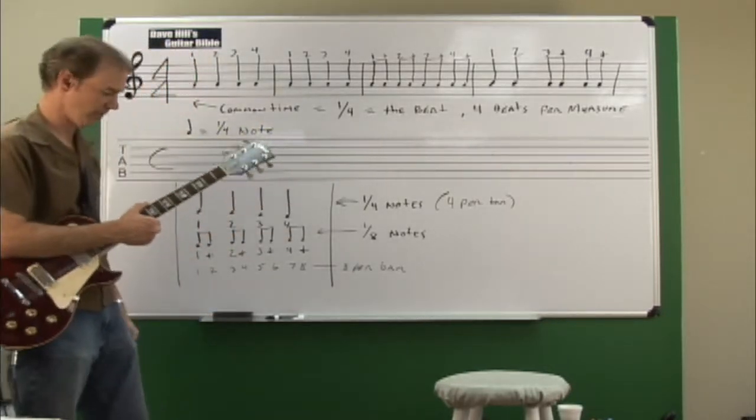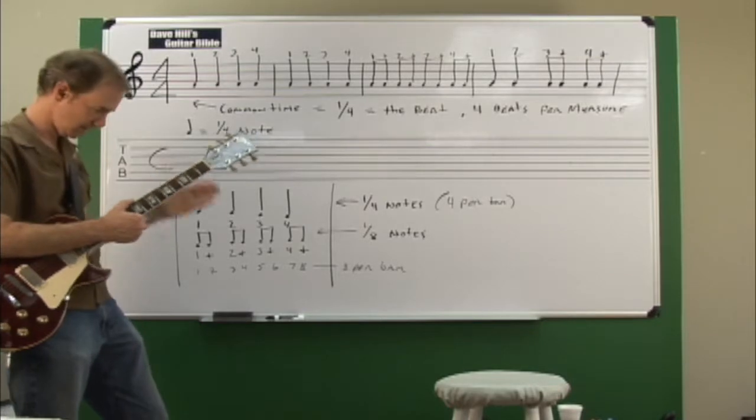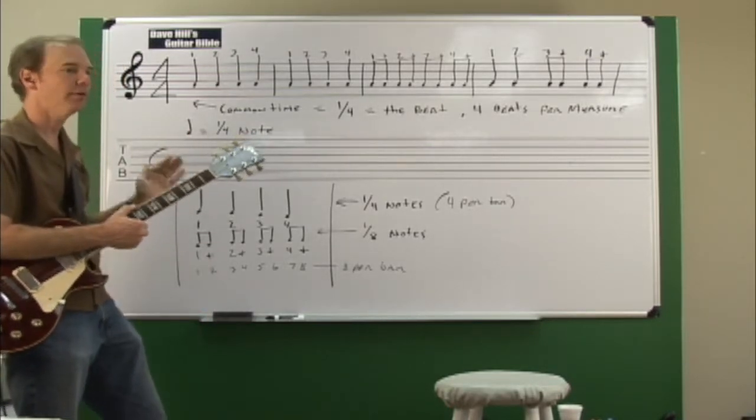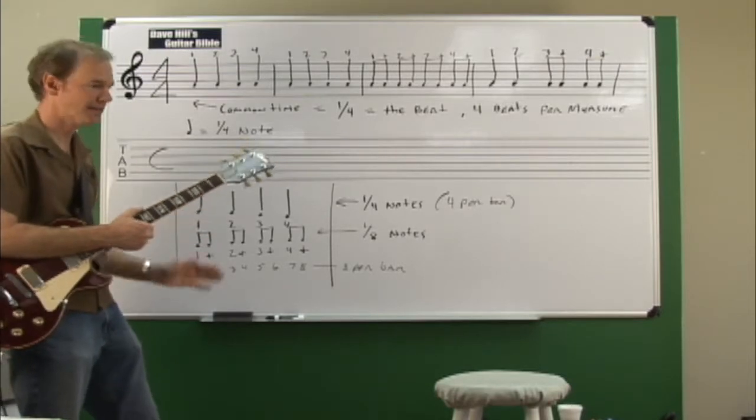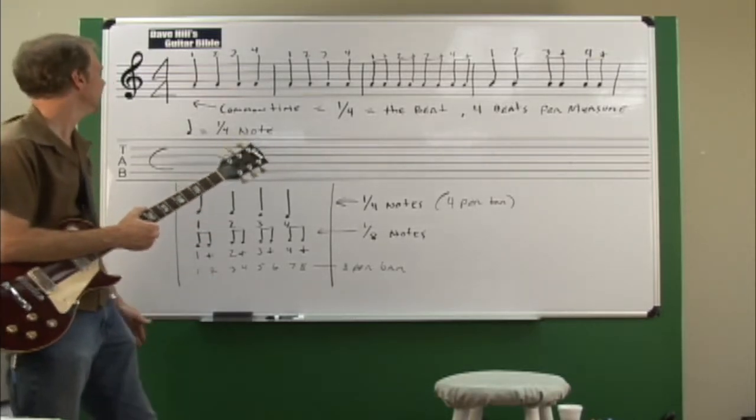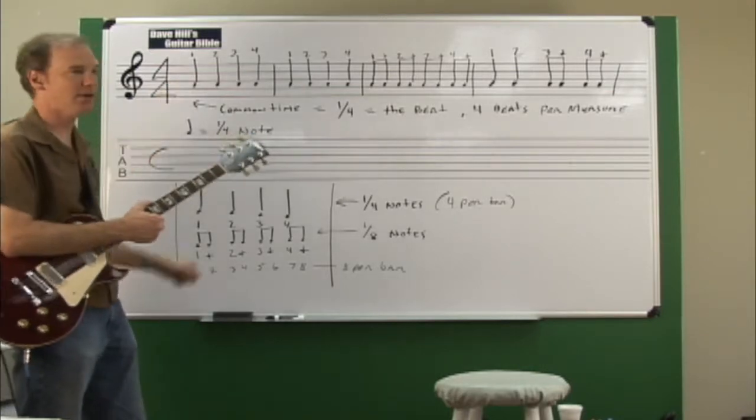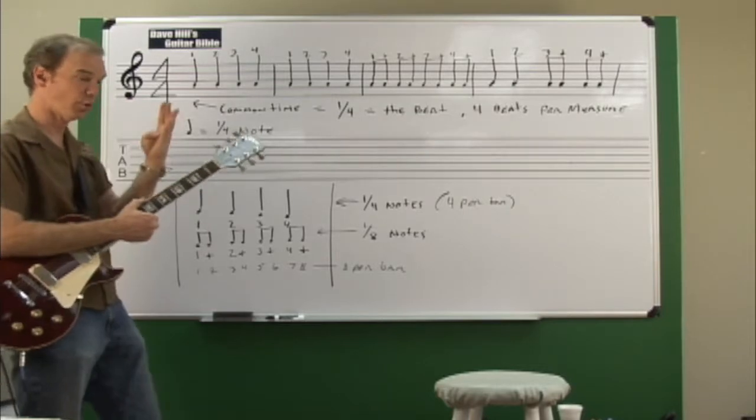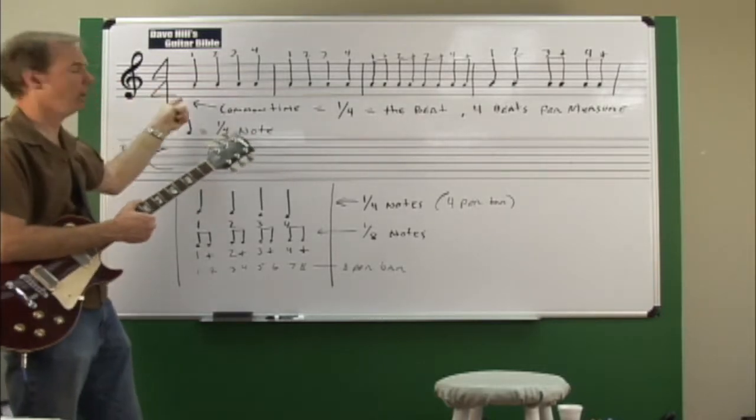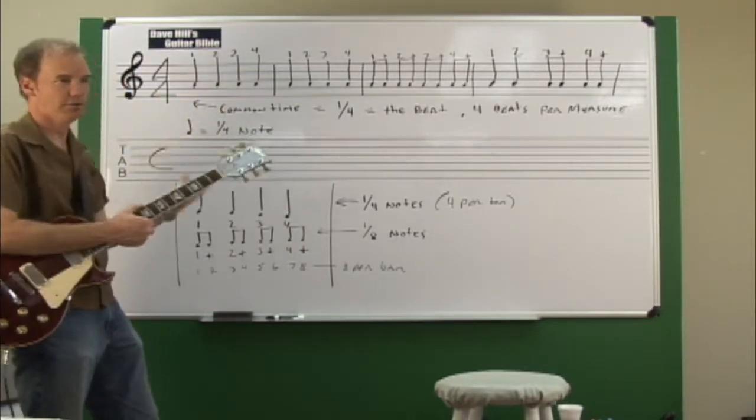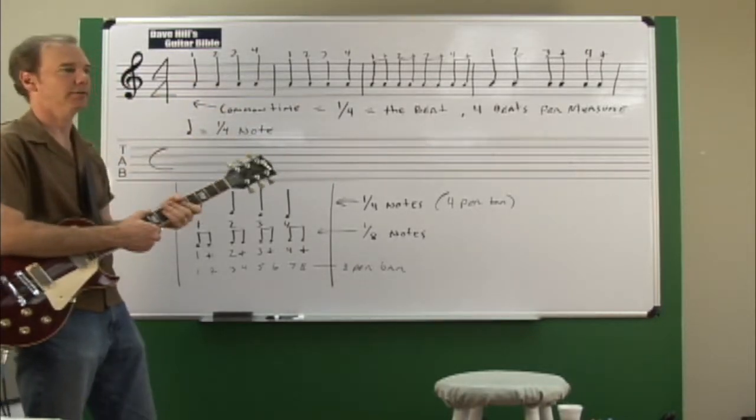In other words, if you tap your foot, the quarter note is the beat right there. That's one, two, three, four. That's the note that's receiving the beat. And the top note tells you how many beats are in the measure. So in 4/4, there's four quarter notes per measure. So that's one, two, three, four. One, two, three, four.